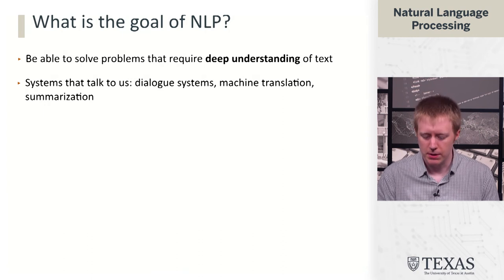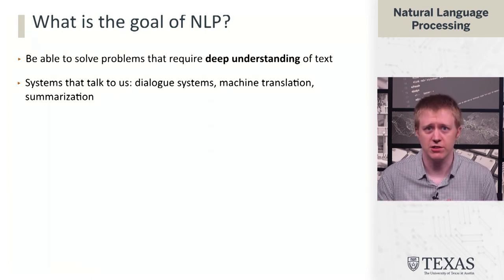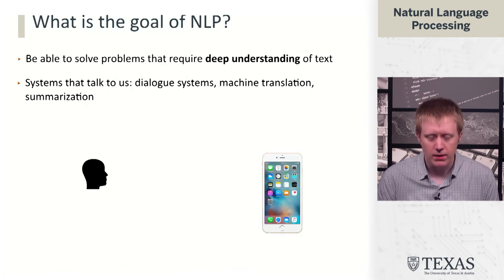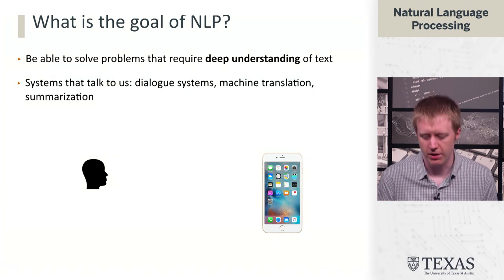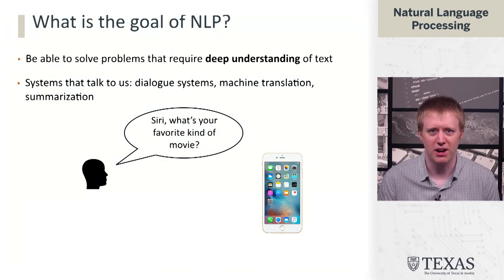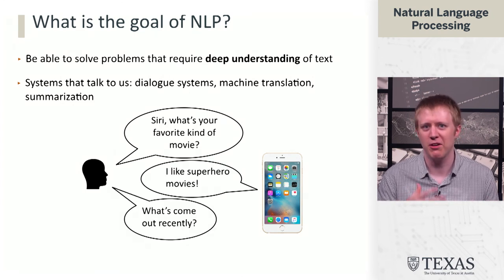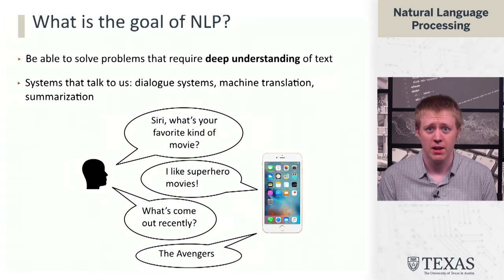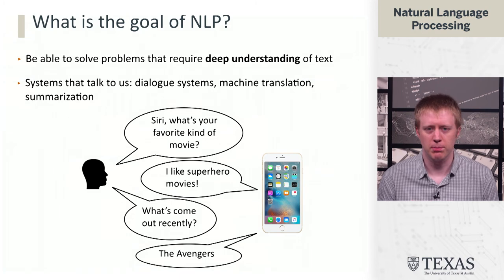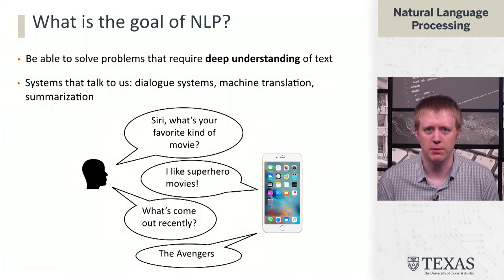For example, we want to build systems that can talk to us, like dialogue systems, machine translation systems, and automatic summarization systems. We'd like to be able to have a conversation with our phone that goes like this: 'Hey Siri, what's your favorite kind of movie?' Siri says, 'I like superhero movies.' And then you say, 'what's come out recently?' And Siri says, 'The Avengers.' We'd like to be able to have a conversation with a personal assistant like this and get some information out of it.